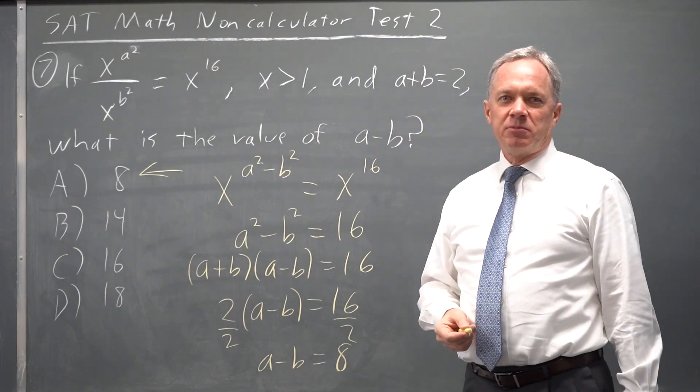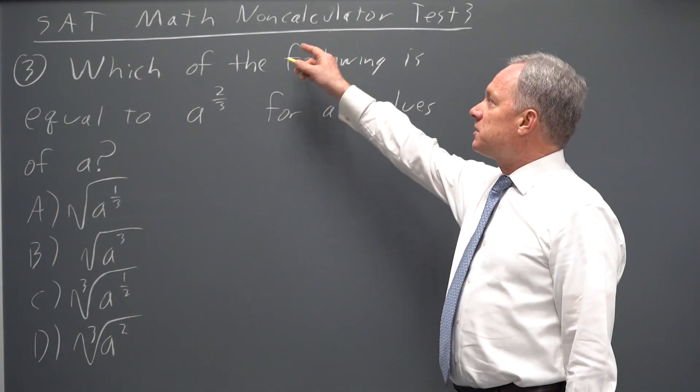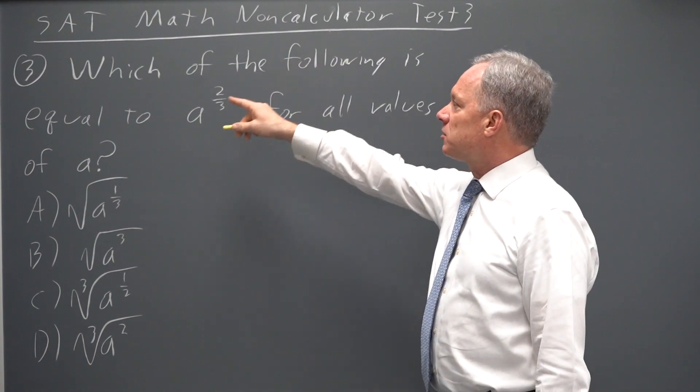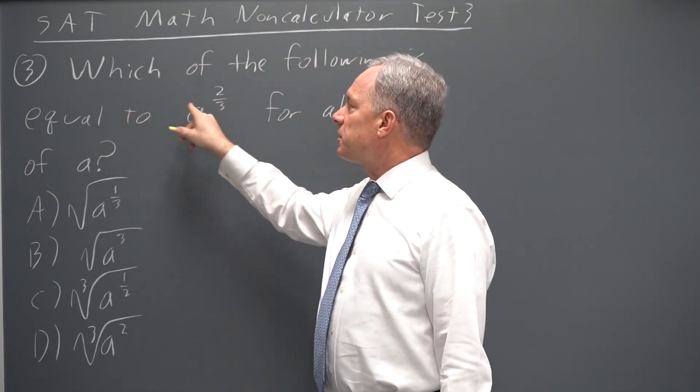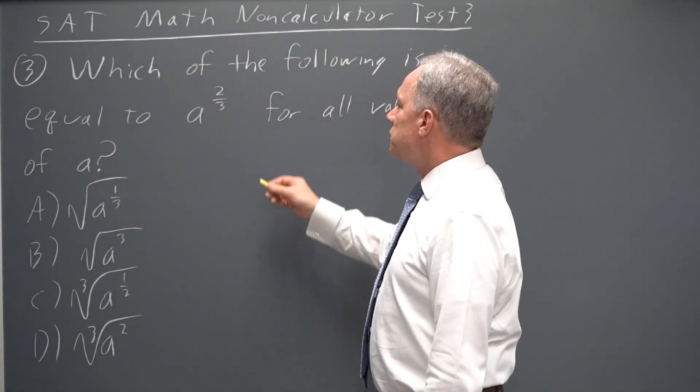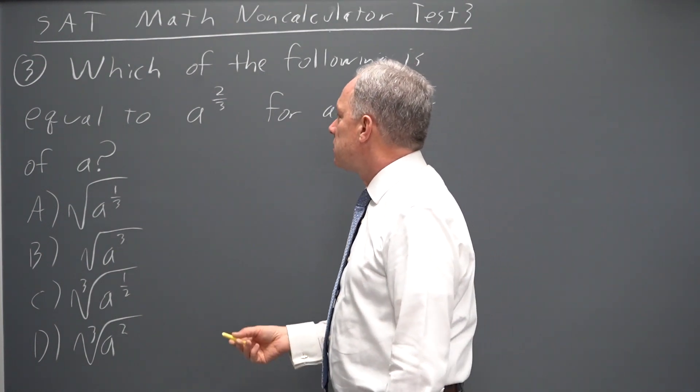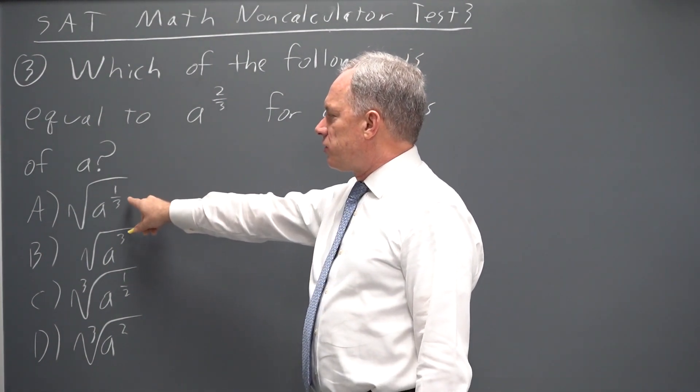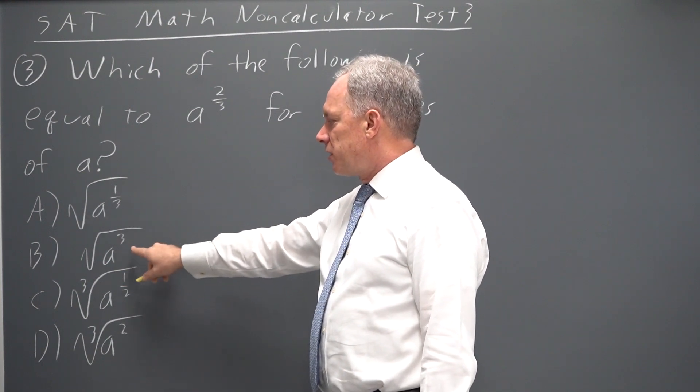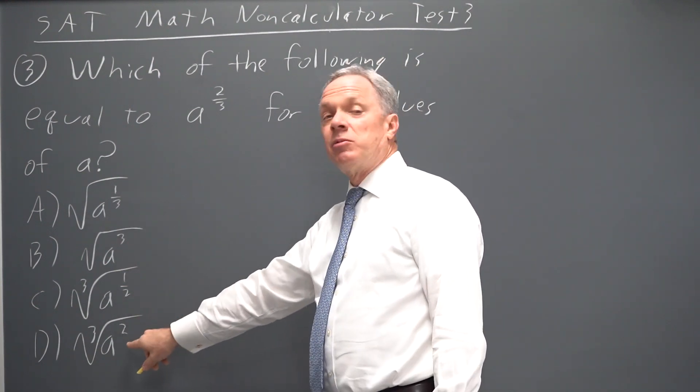Let's continue on to the next problem from test 3. This is SAT test 3, non-calculator, question 3. Here they're asking about rational exponents. Which of the following is equal to a to the two-thirds for all values of a? And I have square root a to the one-third, square root a cubed, cube root a to the one-half, cube root of a squared.